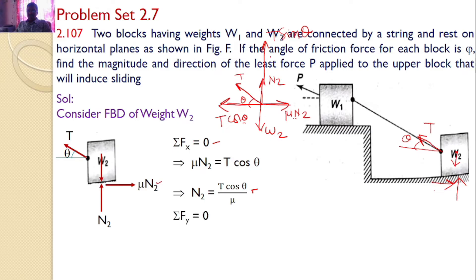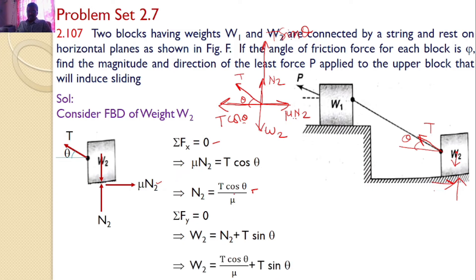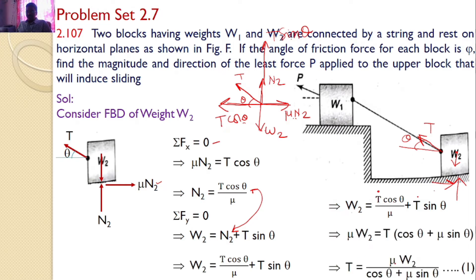Similarly, sigma Fy = 0 gives three forces, with two acting in the positive direction and W2 in the negative direction. Hence, W2 = N2 + T sin(theta). Substituting N2 = T cos(theta) / mu, after simplification we get W2 = T cos(theta)/mu + T sin(theta). Therefore, the tension T = mu*W2 / (cos(theta) + mu*sin(theta)). Let this be equation number 1.